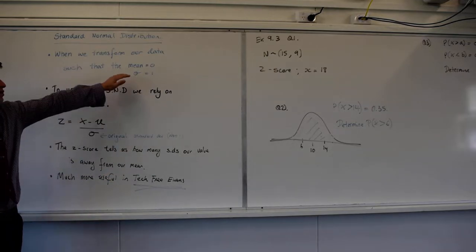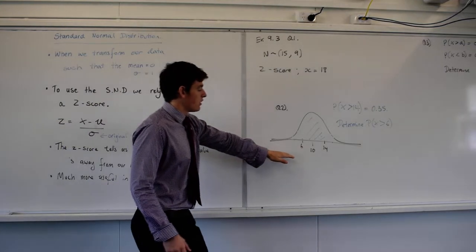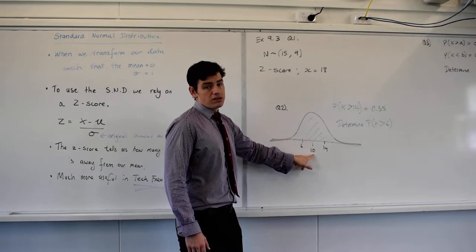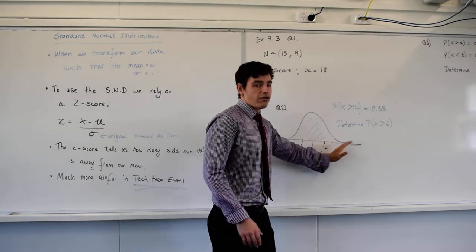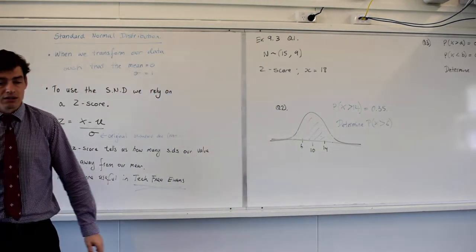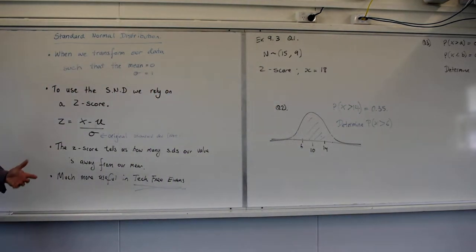The mean centers on zero. So where I have 10 here, if I was dealing with a standard normal distribution, that would be zero. My 6 and my 14, my 6 would be a negative number, my 14 would be a number much smaller than 14, probably about 1.